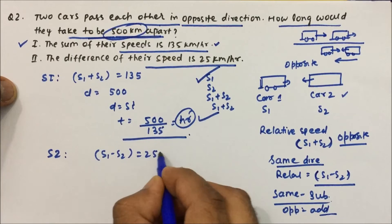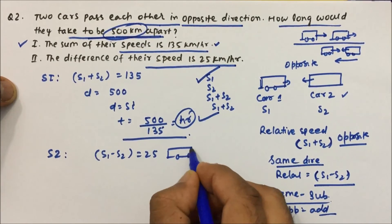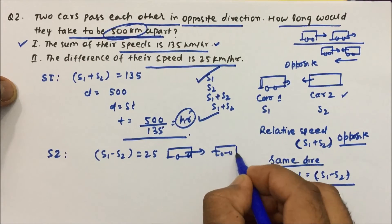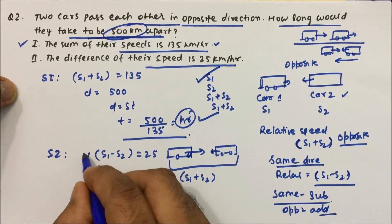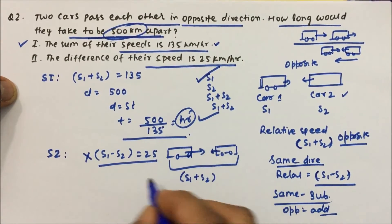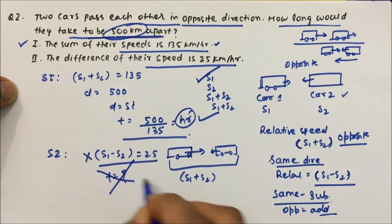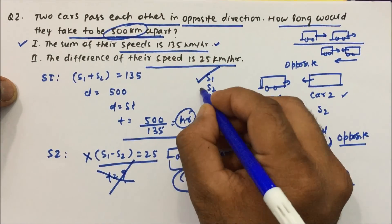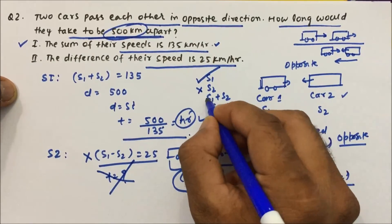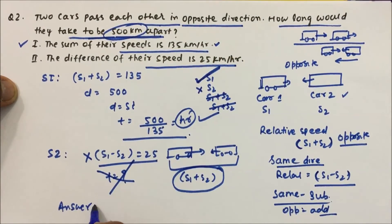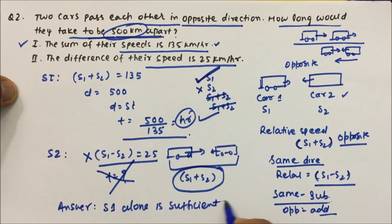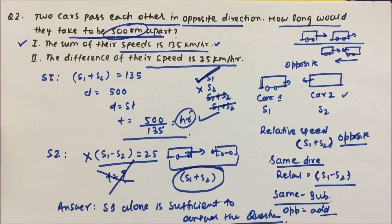Now Statement 2: the difference of their speeds is 25 km/h. But the cars are moving in opposite directions, so we need the sum of their speeds, not the difference. Since only the difference is given, we cannot find the time. Statement 2 alone is not sufficient. Since Statement 1 is sufficient and Statement 2 is not, our final answer is that Statement 1 alone is sufficient to answer the question. Thanks for watching the video.